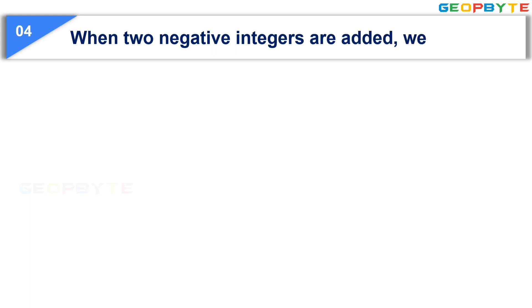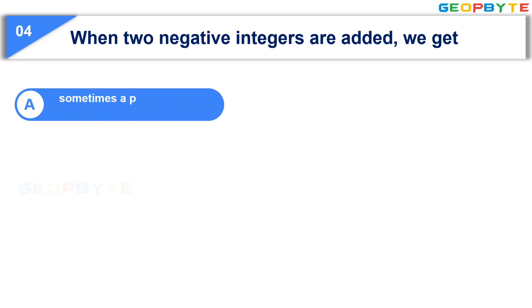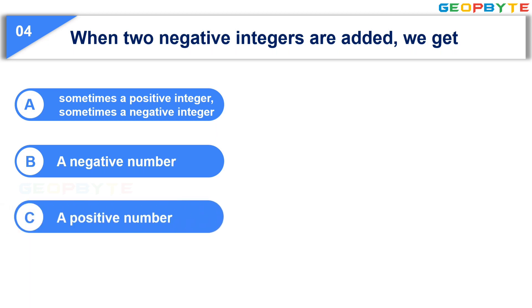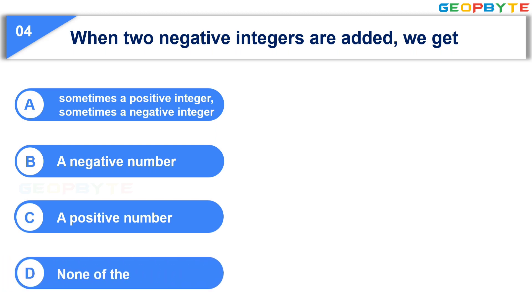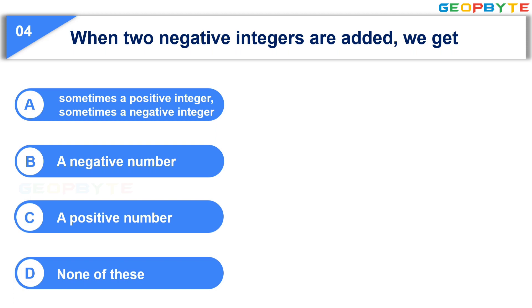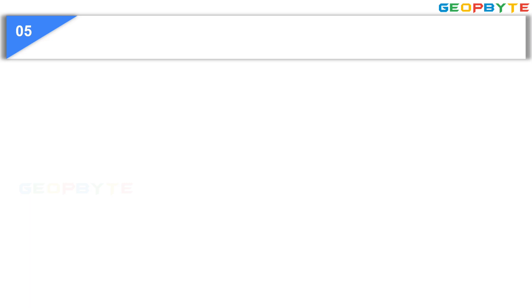When two negative integers are added, we get — Option A: sometimes a positive integer, sometimes a negative integer. Option B: a negative number. Option C: a positive number. Option D: none of these. Your time starts now. Your time is up. And the correct answer is Option B: a negative number.